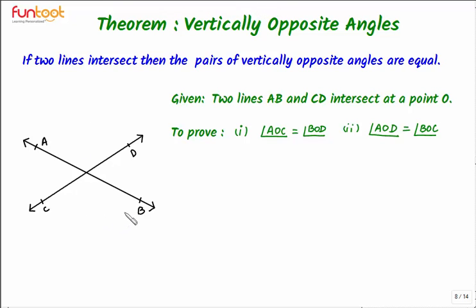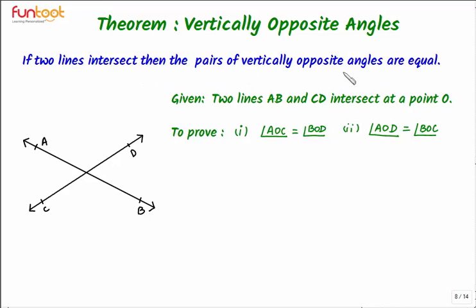Here we have two intersecting lines AB and CD forming different pairs of angles. We know that they are equal. Let's go through the theorem and its proof. Theorem on vertically opposite angles. The statement of the theorem is: if two lines intersect, then the pairs of vertically opposite angles are equal.